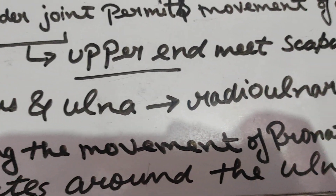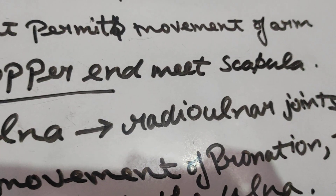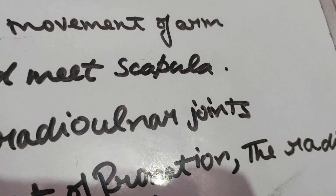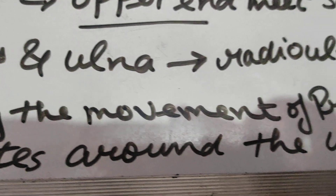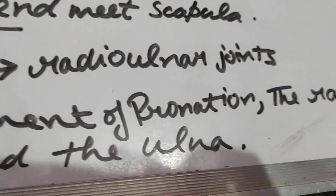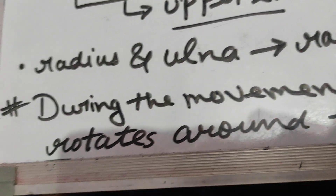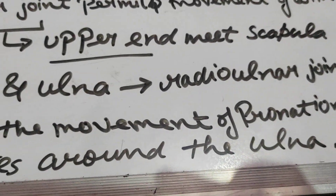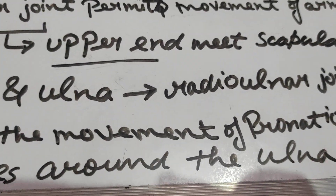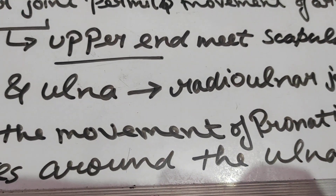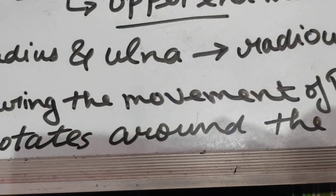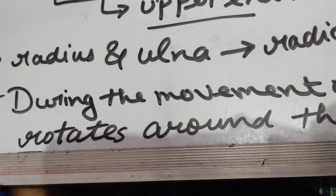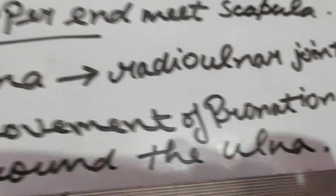Next, the radius and ulna form the radio-ulnar joint. During the movement of pronation, the radius rotates around the ulna — meaning when we lie on the chest, the radius rotates around the ulna.